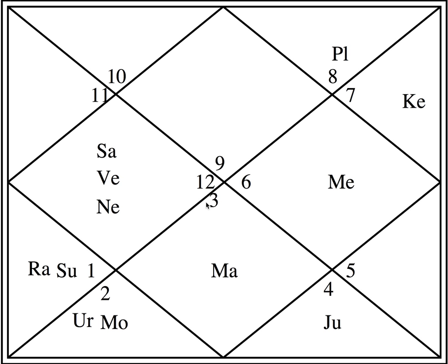Now the seventh house — the ruler is determined by its sign. The sign is number 3 which is Gemini, ruled by Mercury. Mercury is placed here. Counting: 1, 2, 3, 4, 5, 6, 7, 8, 9, 10 — so Mercury is placed in the tenth house in the sign of Virgo, number 6. So Mercury is in the tenth house in its exaltation sign Virgo.